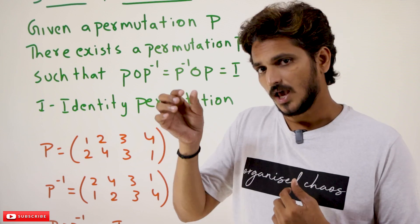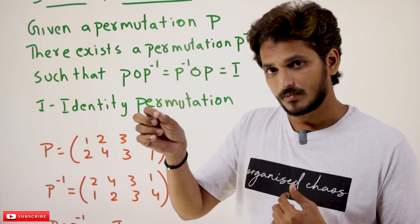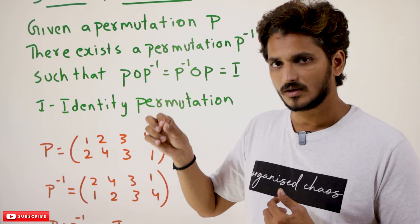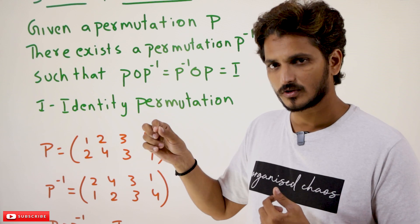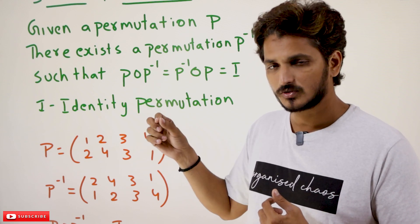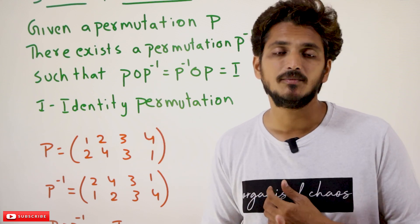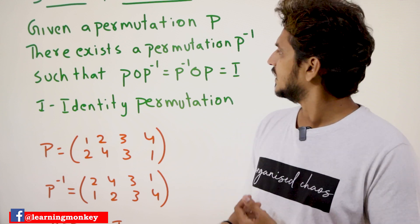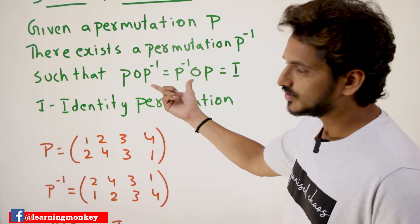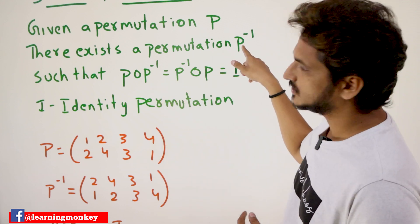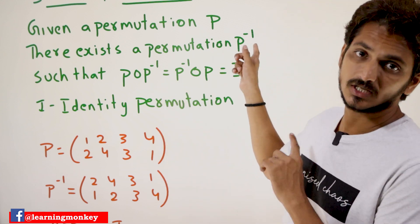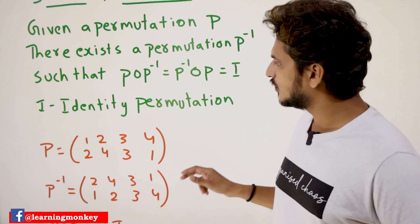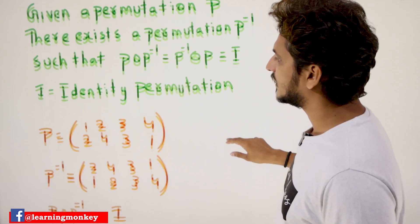The identity permutation means 1 maps to 1, 2 maps to 2, 3 maps to 3, 4 maps to 4, 5 maps to 5. This is what we call the identity permutation. If it satisfies this property, then we say P-inverse is the inverse of P. With an example, you are going to understand it better.